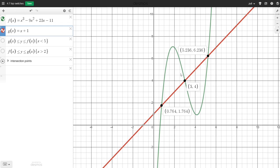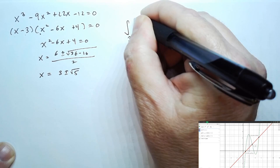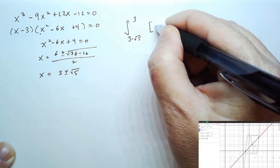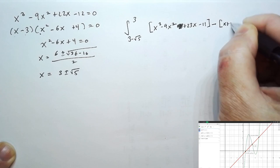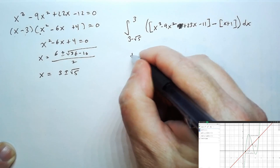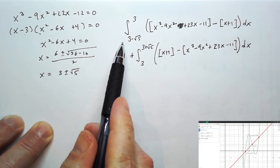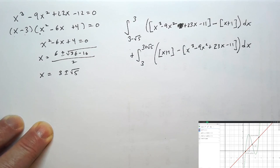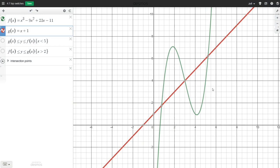On the first interval, we take the green cubic polynomial minus the red linear function. To find the area, we integrate from 3 minus root 5 up to 3 of (x cubed minus 9x squared plus 23x minus 11) minus (x plus 1) dx. Then we add the integral from 3 to 3 plus root 5 with the linear function on top and the cubic on the bottom. Simplifying the integrands gives polynomials in each case, so finding antiderivatives is straightforward. I'll leave working out both integrals to you.